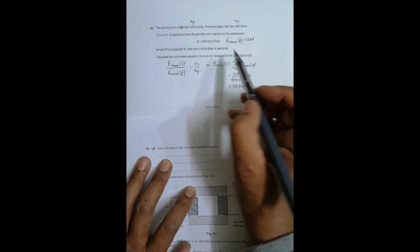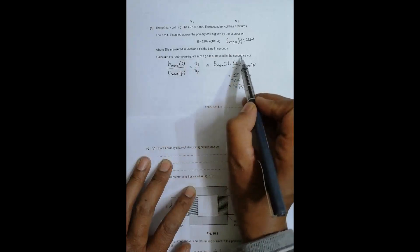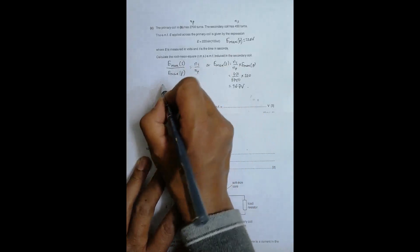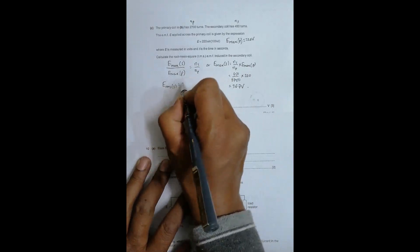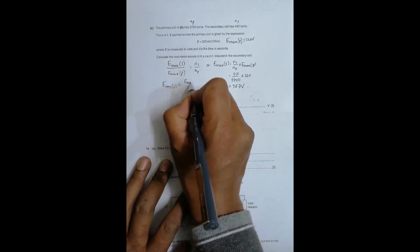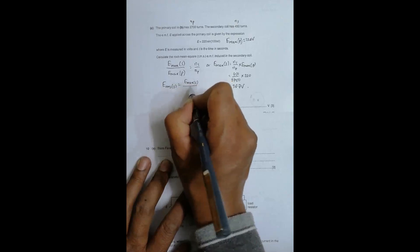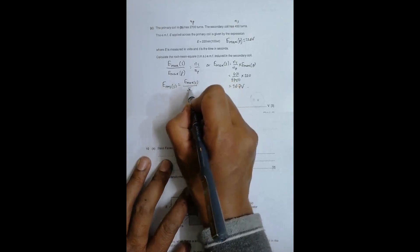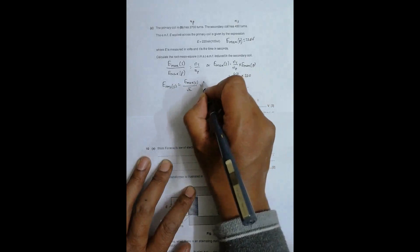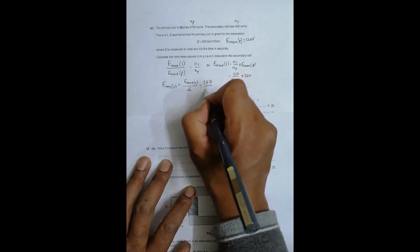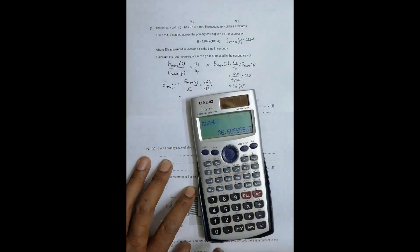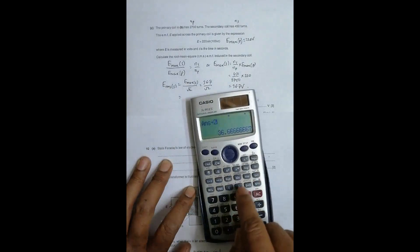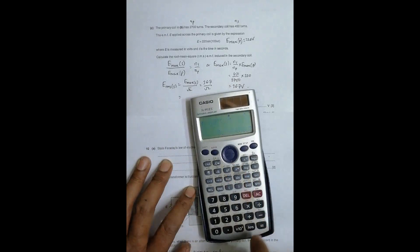What we require is secondary RMS, so E_RMS secondary equals E_max secondary divided by root 2. That gives us 36.7 divided by root 2.